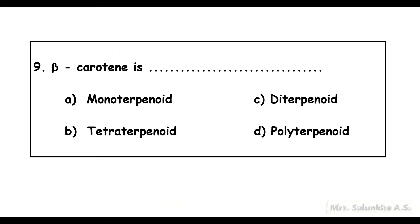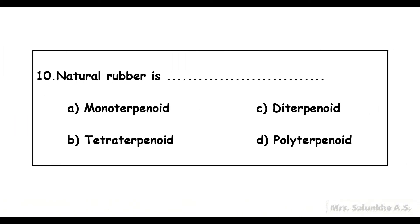Beta carotene is tetraterpenoid. Natural rubber is polyterpenoid.